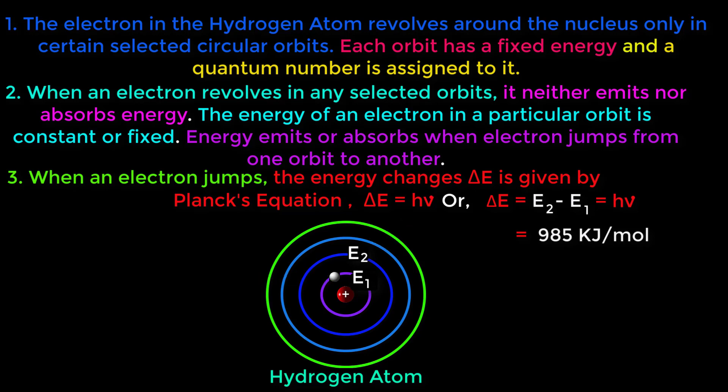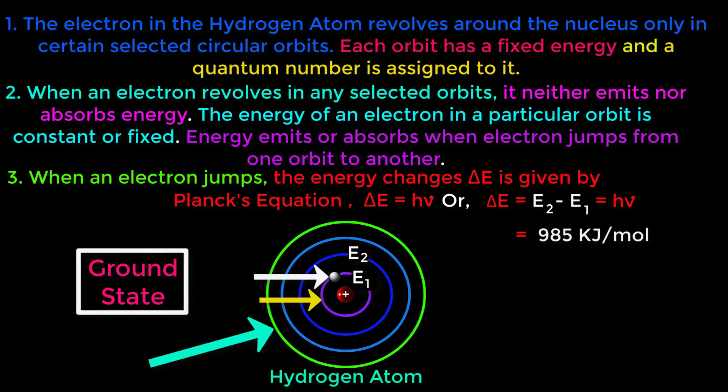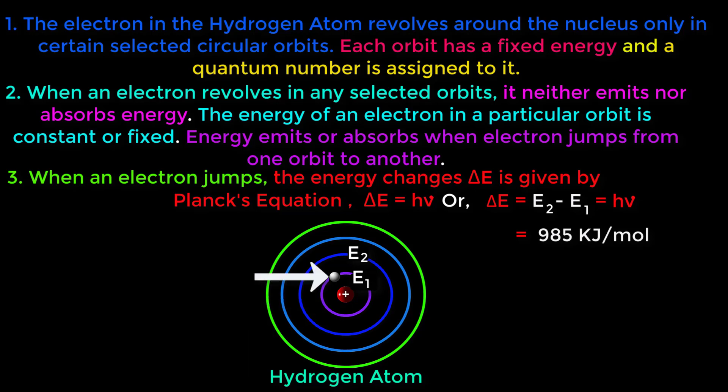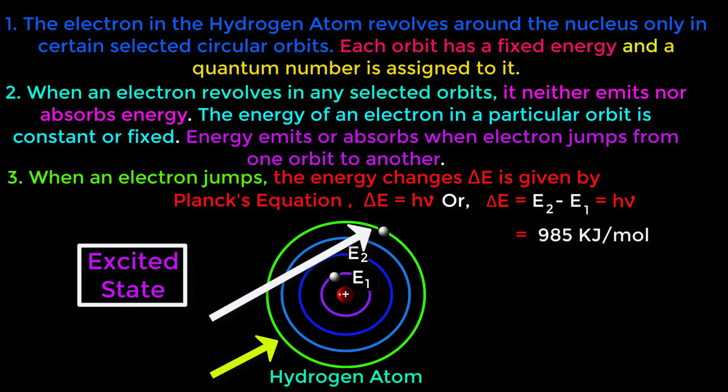Do remember, when electron stays in the first orbit then the state of hydrogen atom is called ground state and ground state is stable. When electron jumps from lower orbit to higher orbit then the state of hydrogen atom is called excited state and excited state is unstable.